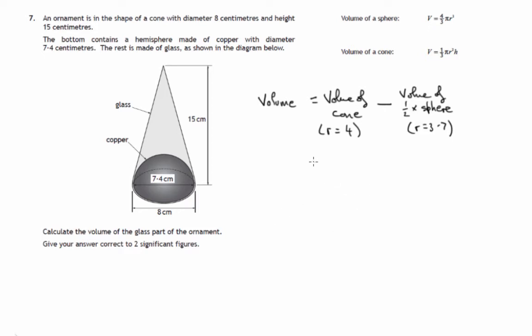So the volume of the cone, let's look at all the information we've got. That's a third pi. We'll put the formulas down first. A third pi r squared h.